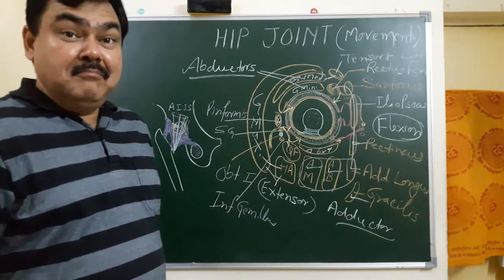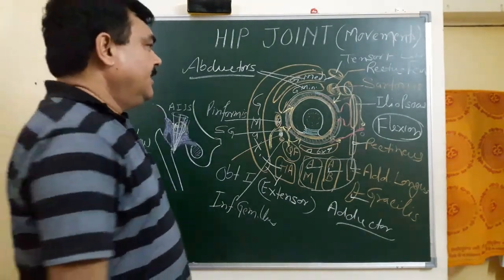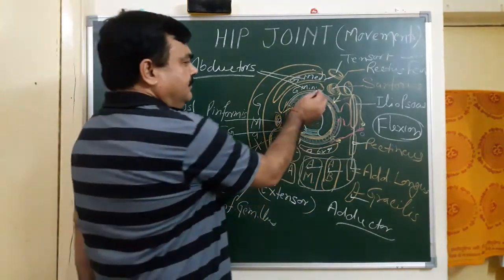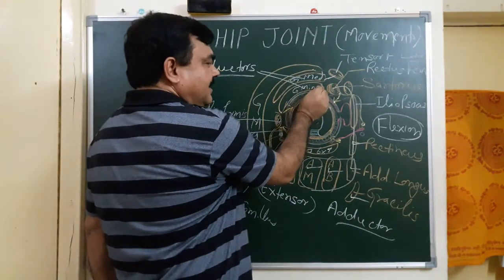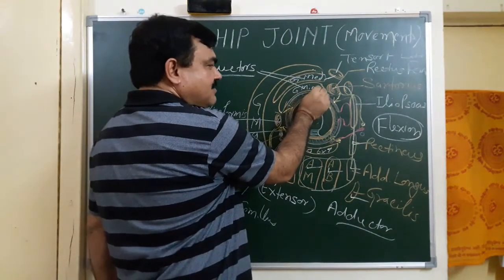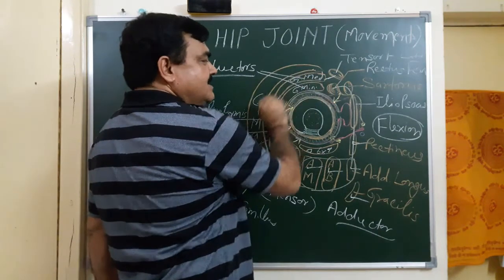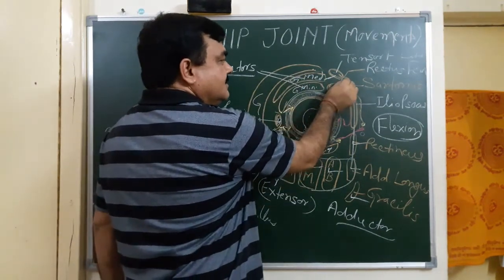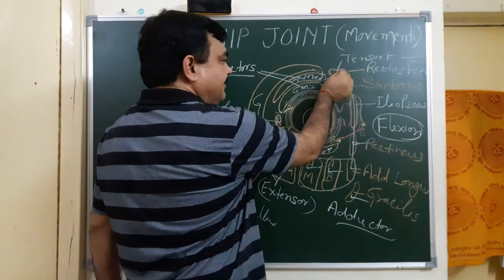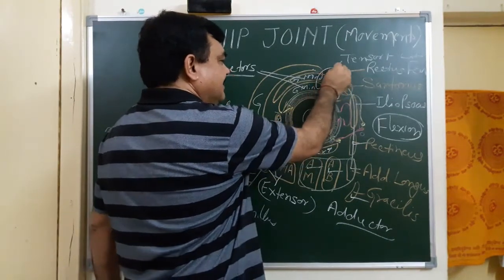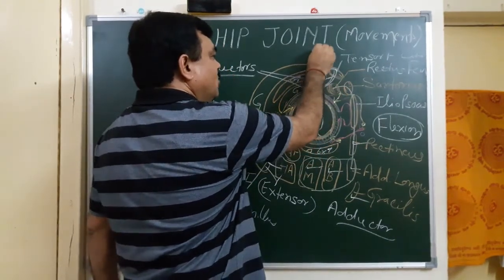There are also medial rotators and lateral rotators at the hip joint. The medial rotators are the anterior fibers of gluteus minimus, gluteus medius, and tensor fasciae latae.